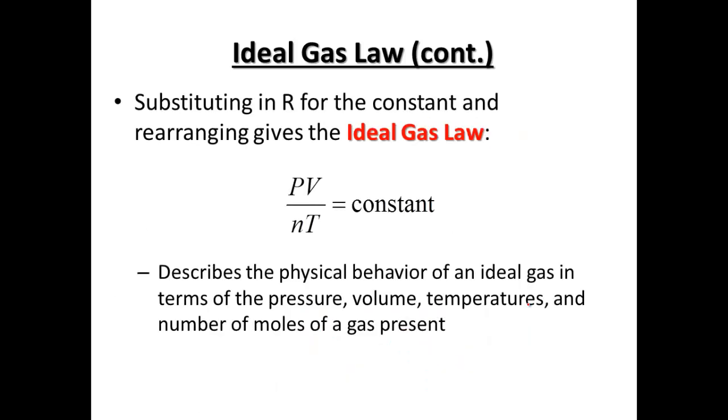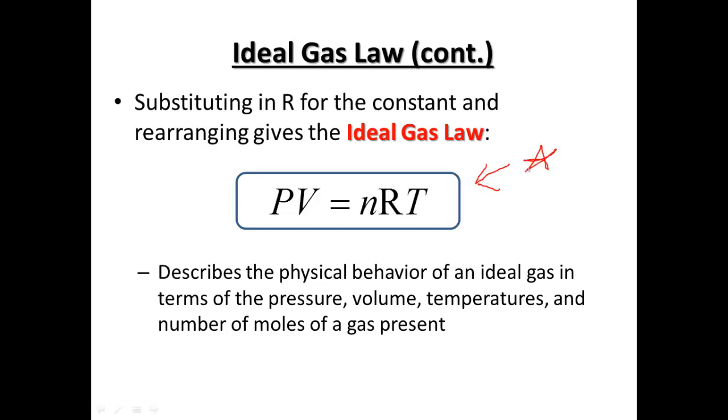So substituting in R for the ideal gas constant rearranges the ideal gas law. PV equals N over T equals a constant, so that constant is our letter R. And how we're going to write this equation generally, we're just going to move it around. PV equals NRT, so we need to make sure that this is the one that we write down. This equation here, pressure times volume, is equal to the number of moles times R, the ideal gas constant, times the temperature in Kelvin.